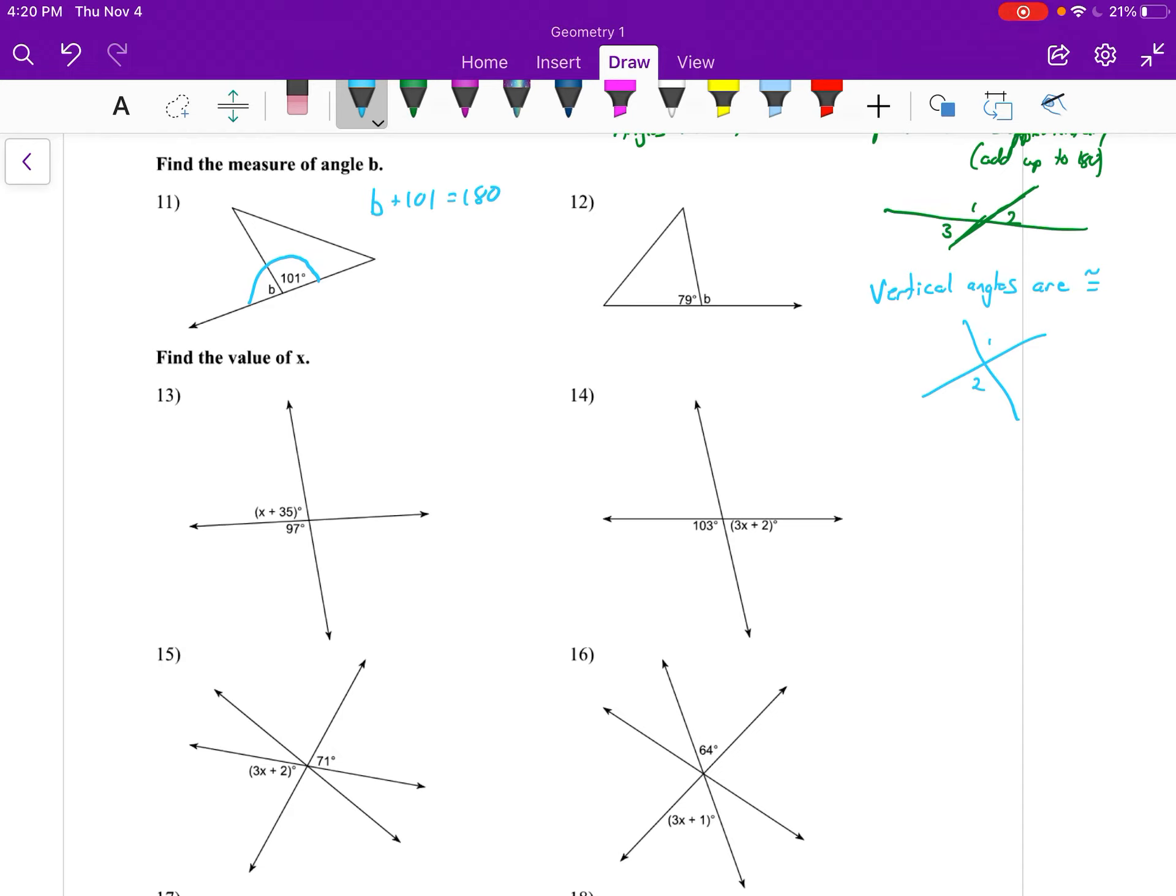We could subtract 101 from both sides, so we're going to subtract 101 from both sides and we get that b is 79. So I said you don't have to write this equation when you're just dealing with finding one variable b. Once we get to 13 and 14, you definitely want to write the equation out.